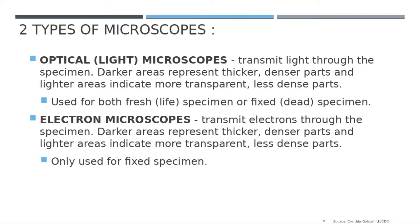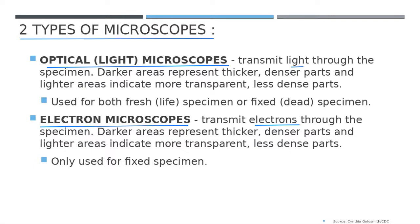There are two types of microscopes. The first is the optical or light microscope, which uses light transmitted through the specimen. The second is the electron microscope, which uses electrons to transmit energy through the specimen. Electrons have a shorter wavelength than light, so the electron microscope gives better resolution and higher magnification.